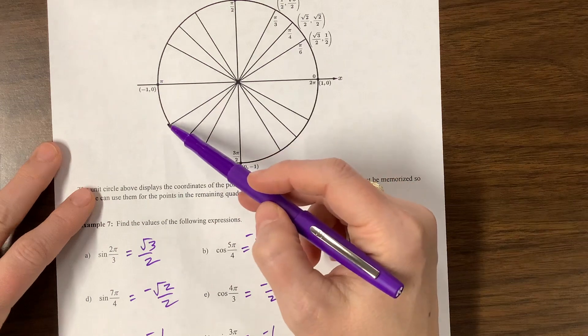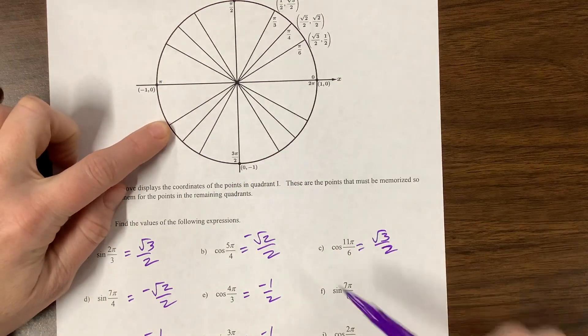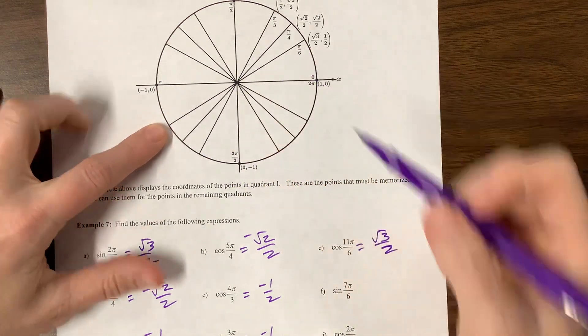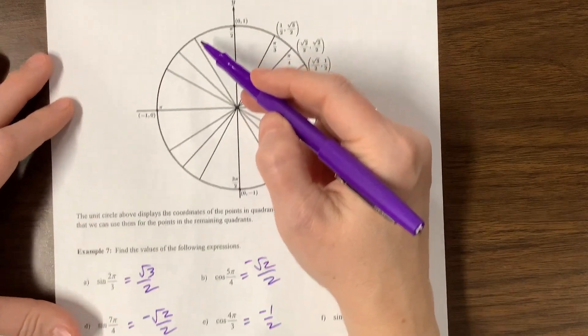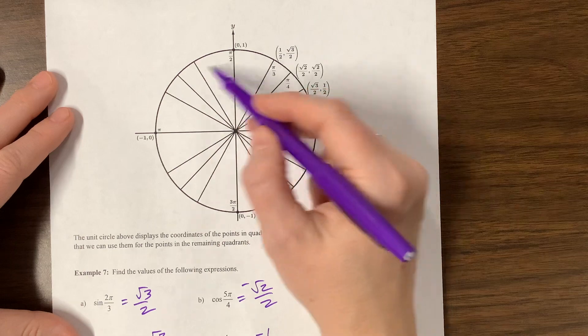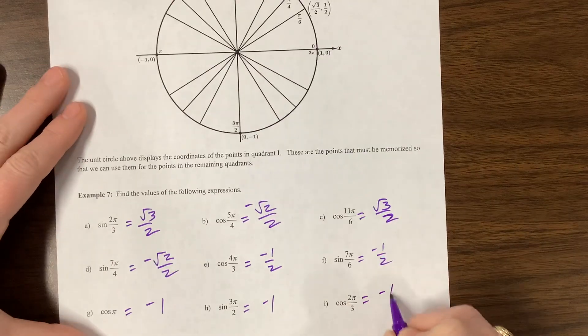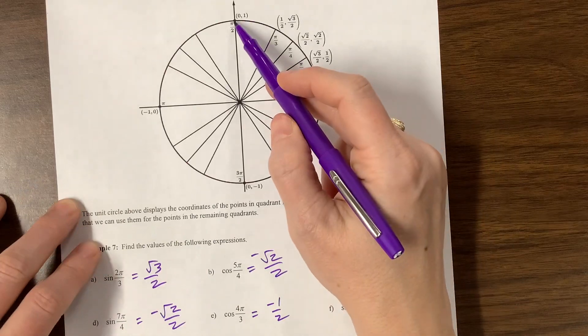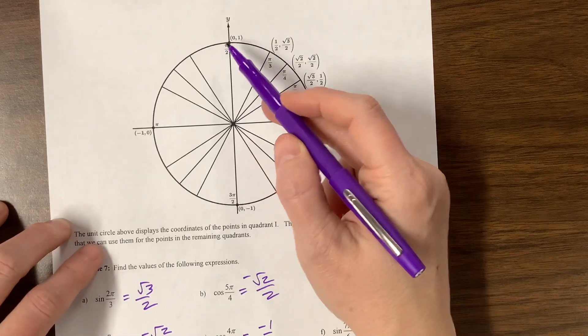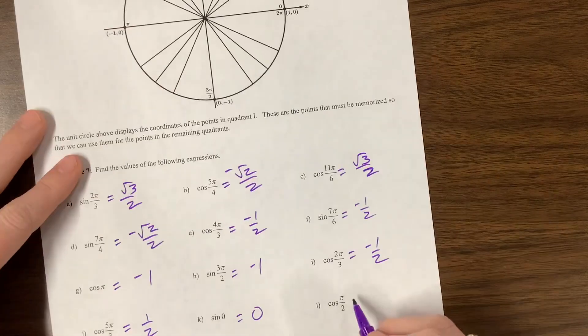7 pi over 6 puts us over here, and we want sine. That's the y value. We went down a little, so that's negative 1 half. Cosine of 2 pi over 3 is up here. Cosine is the x. We went back a little bit. That's negative 1 half. And cosine of pi over 2. Pi over 2 is right here. Cosine is the x. Our x value is 0. We didn't move left or right. That's equal to 0.